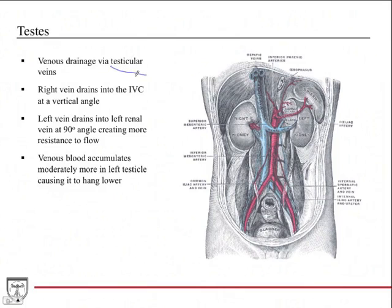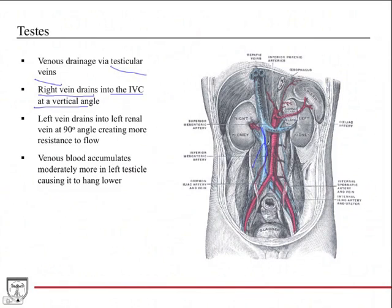The venous drainage is via the testicular vein, which travels in the spermatic cord and through the inguinal canal, then comes up into the abdomen. It has unique drainage analogous to the ovarian veins in the female — and this is high yield for board exams and clinically important. The right testicular vein drains directly into the IVC at a nice vertical angle. The left testicular vein drains into the left renal vein at a 90-degree angle, similar to the left ovarian vein.